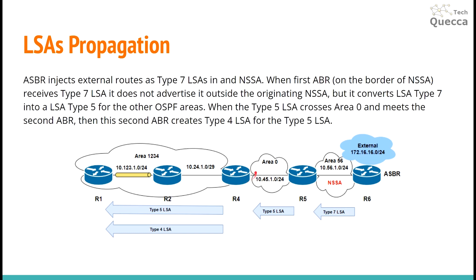Then when the next ABR receives the Type 5 LSA from area 0, that second ABR creates a Type 4 LSA for the Type 5 LSA and also sends the Type 5 LSA into the next area. So in that area we can see two LSAs: Type 5 and Type 4.